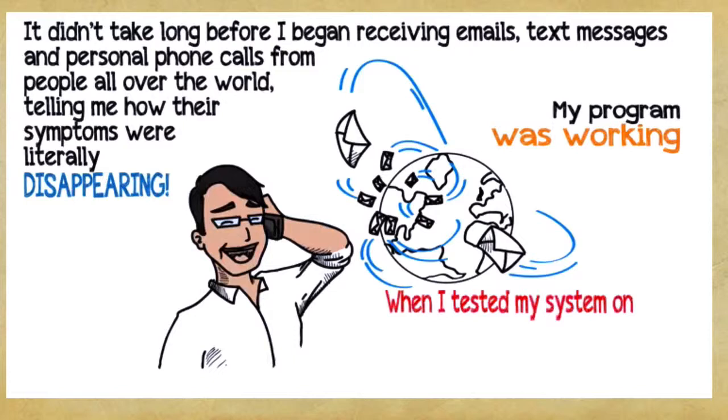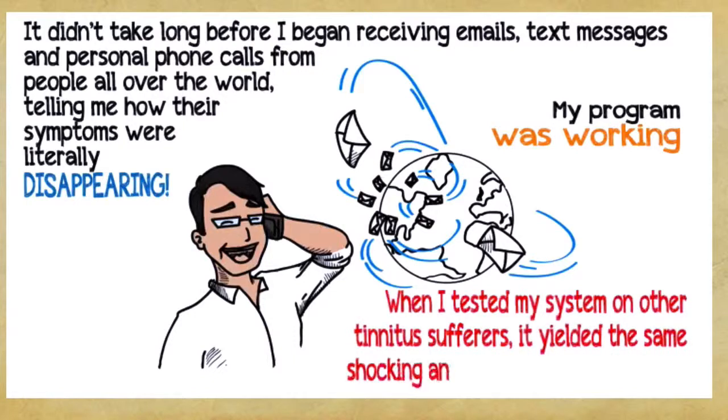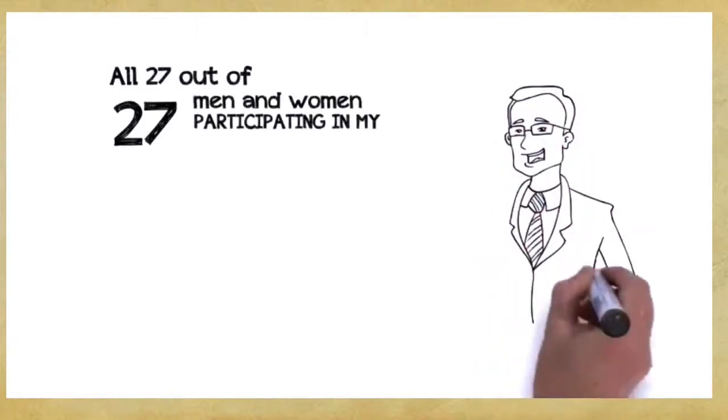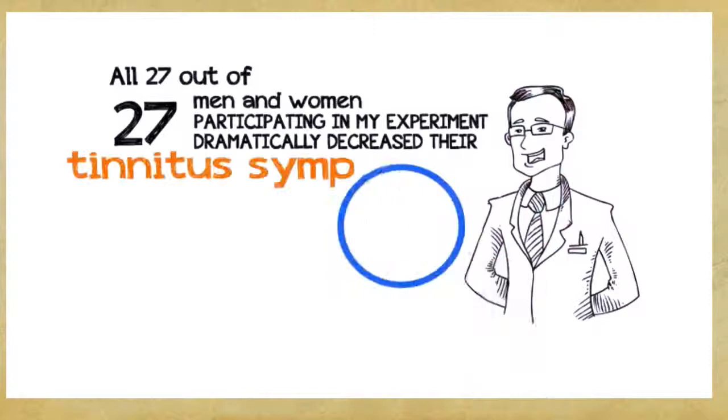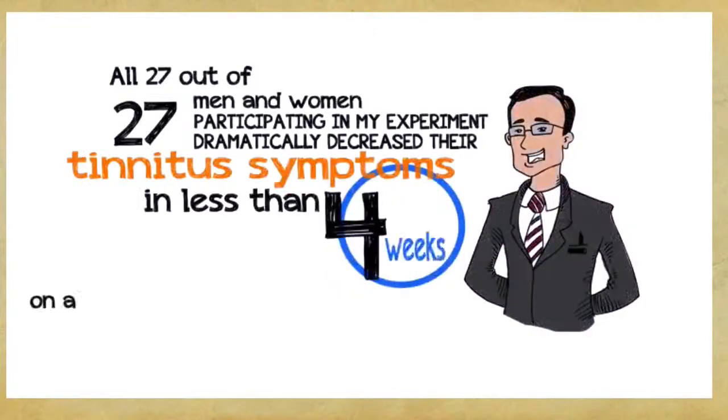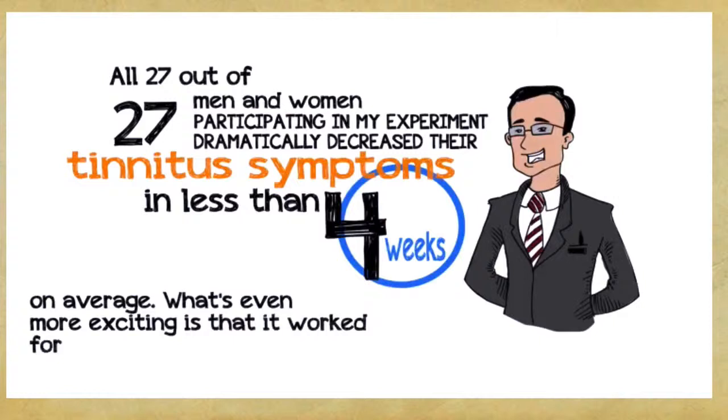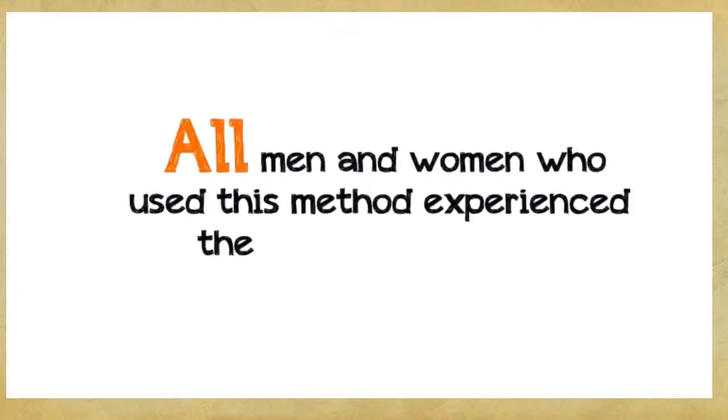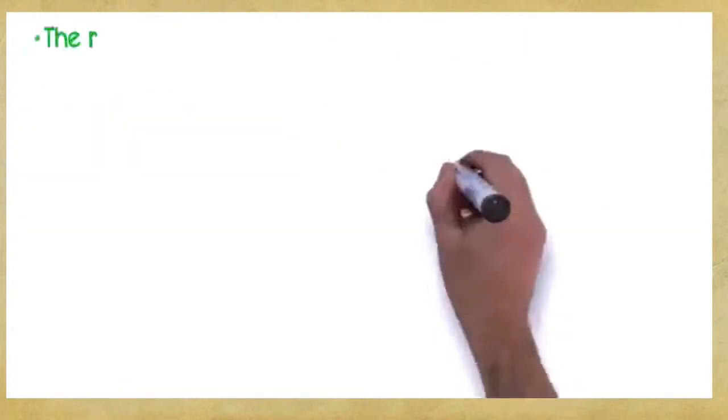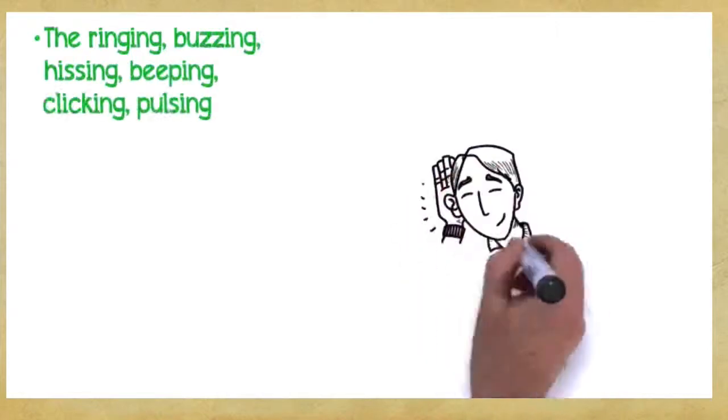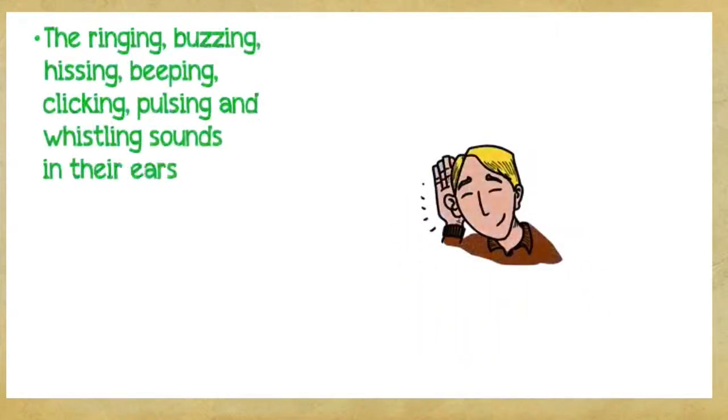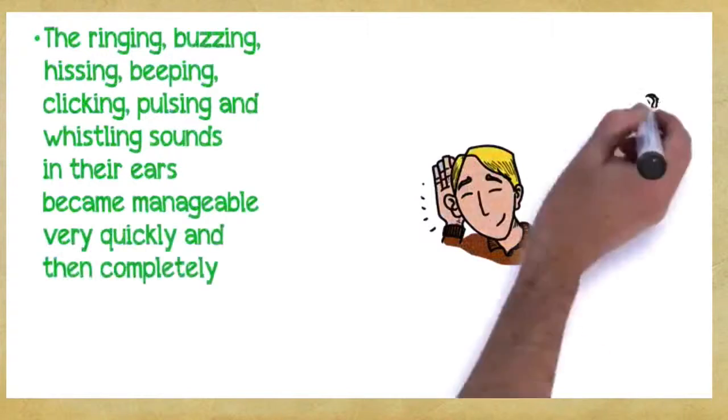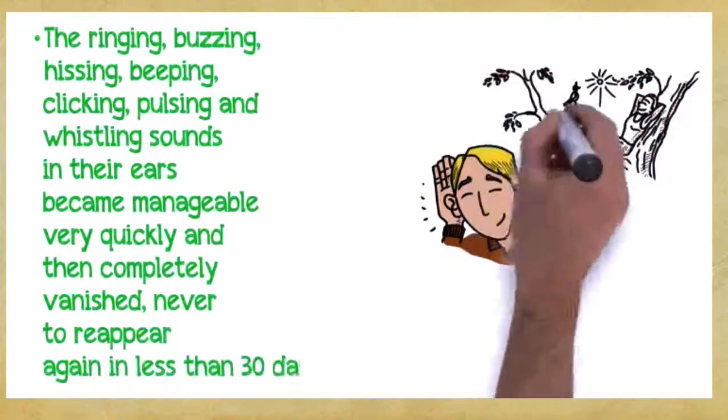My program was working and more and more people were asking me for help. When I tested my system on other tinnitus sufferers, it yielded the same shocking and groundbreaking results. All 27 out of 27 men and women participating in my experiment dramatically decreased their tinnitus symptoms in less than four weeks on average. What's even more exciting is that it worked for all types of tinnitus and levels of severity and for men and women of any age. All men and women who used this method experienced the following benefits: the ringing, buzzing, hissing, beeping, clicking, pulsing, and whistling sounds completely vanished, never to reappear again in less than 30 days.